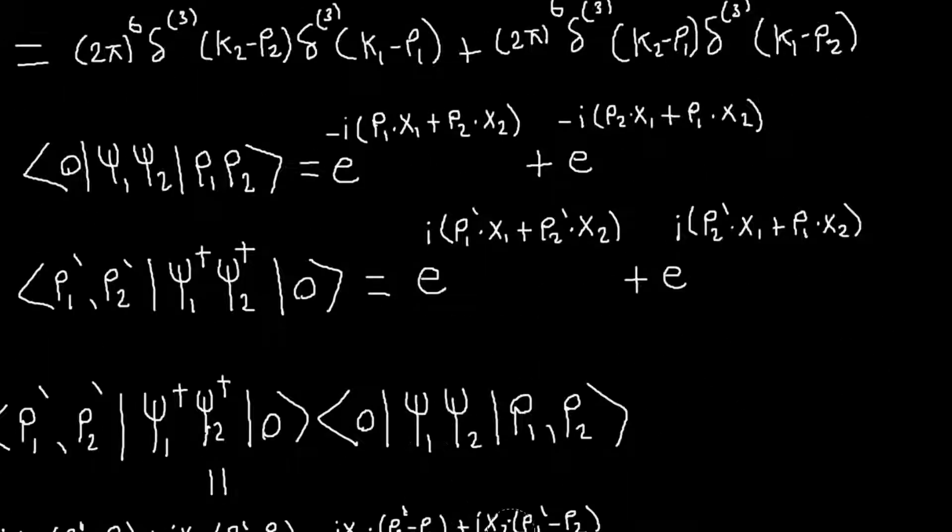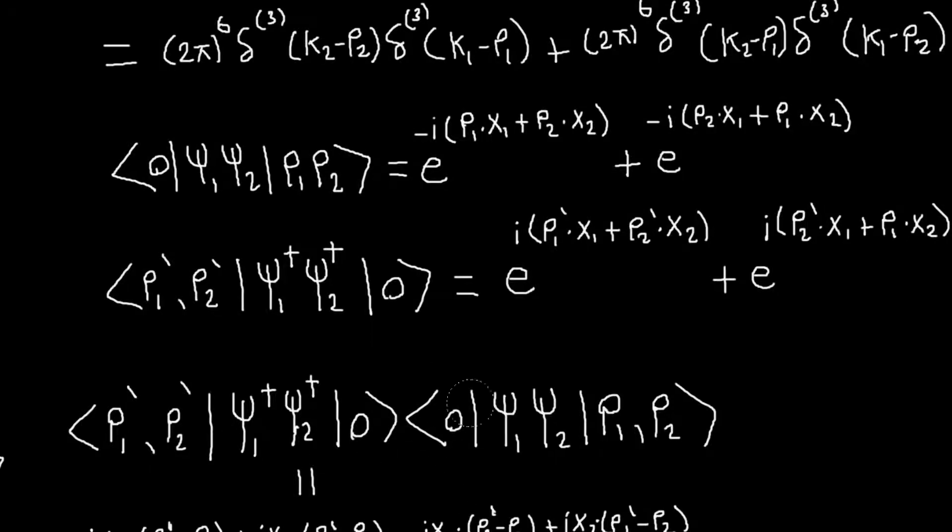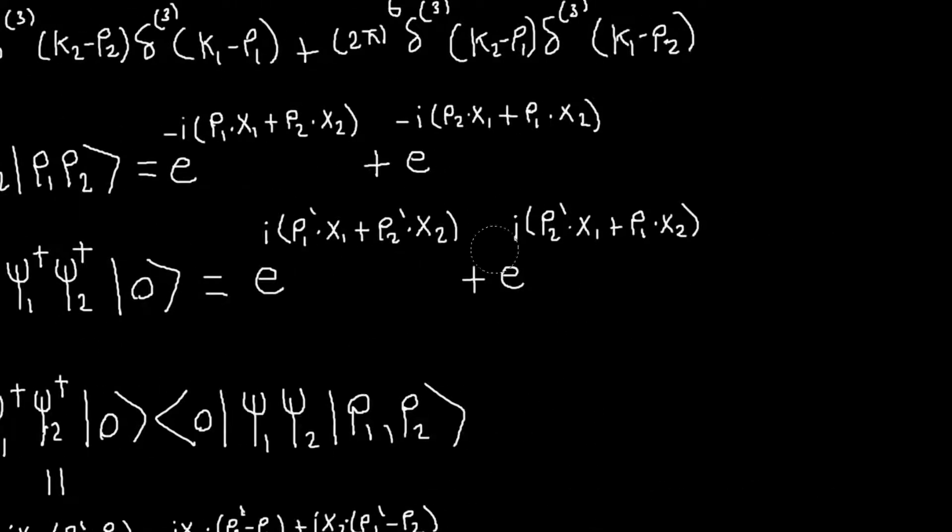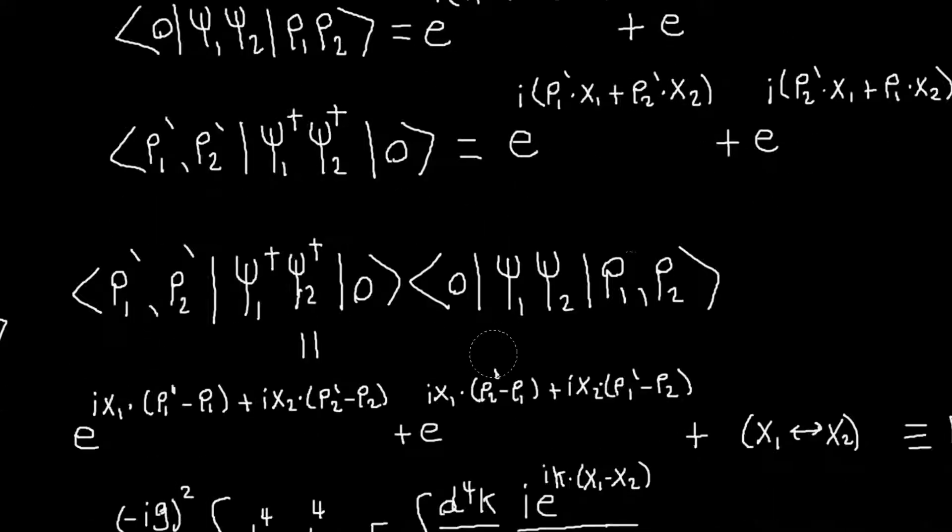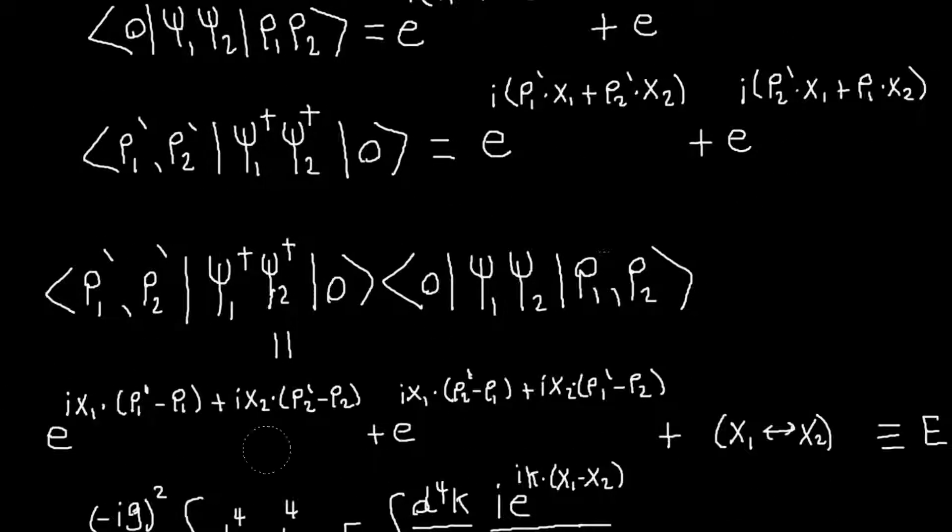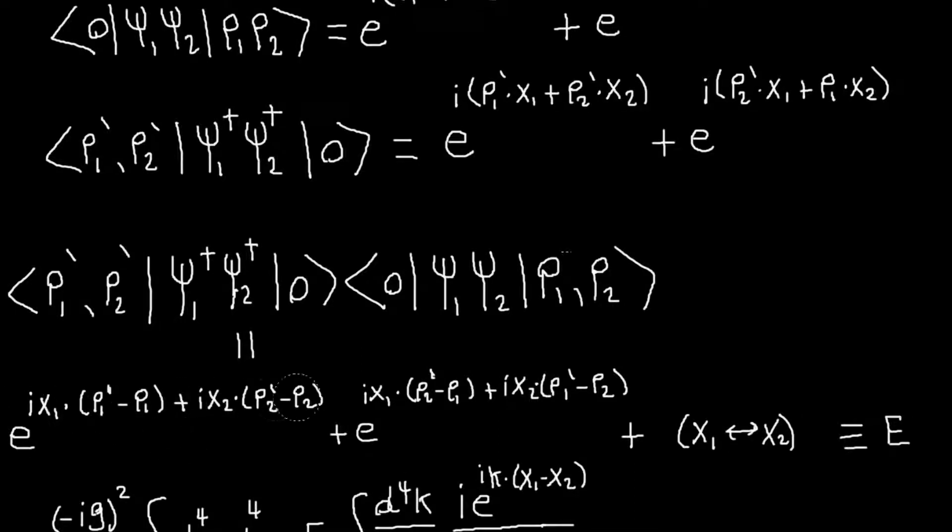And now I need to multiply these things together, and that's just going to involve foiling these terms, which you can do that if you want, but Tong does write out what the answer is, so he writes it as this kind of thing, again, just involving these exponentials, and so it's these 2 terms, and then plus another 2 terms, where it's basically the same as these 2 terms, but x1 and x2 are switched.